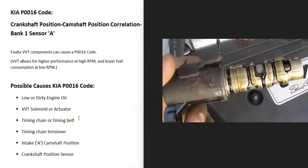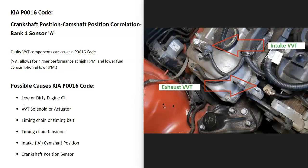If the oil looks good, the next thing to check is the variable valve timing solenoid. This is a solenoid that slides in and out, and if it goes bad — or more commonly gets clogged up with old dirty oil — it's going to cause issues. There will be some differences depending on the year, the Kia, the make, and things like that. So it's always a good idea to get a diagram for exactly what's going on inside your engine.